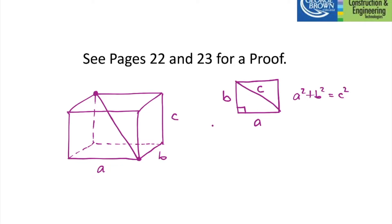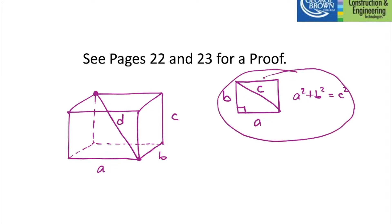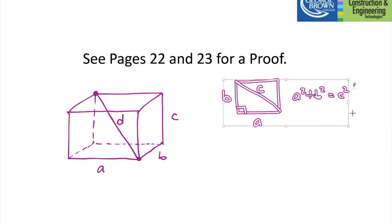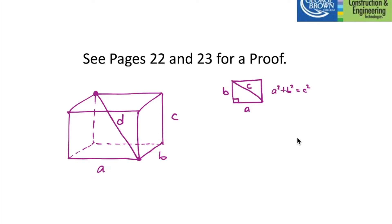We're going to derive an analogy in the three-dimensional case by finding the length of the diagonal D. Somehow, I'm going to use the two-dimensional Pythagorean theorem to help create the three-dimensional formula. There are different ways of doing it, but I'll show you one approach that works very easily.